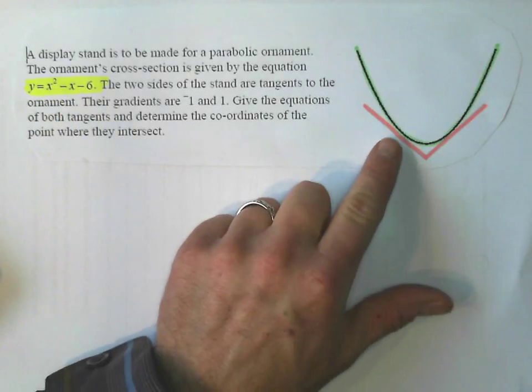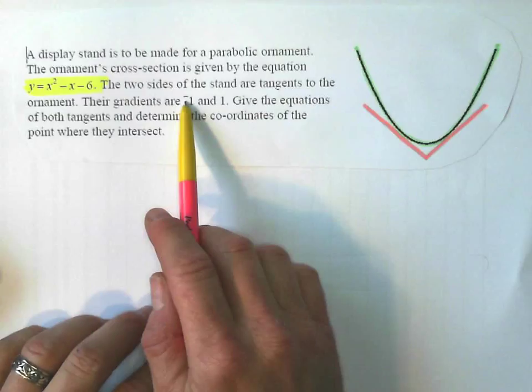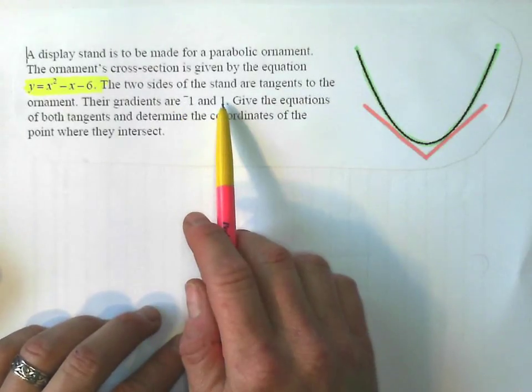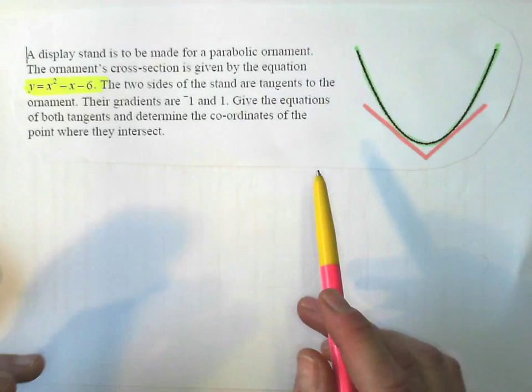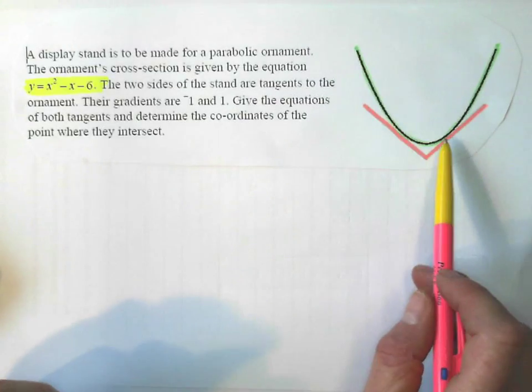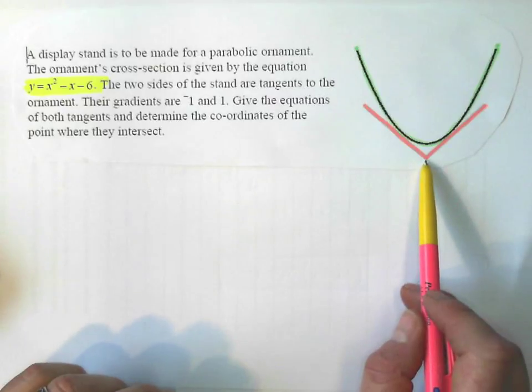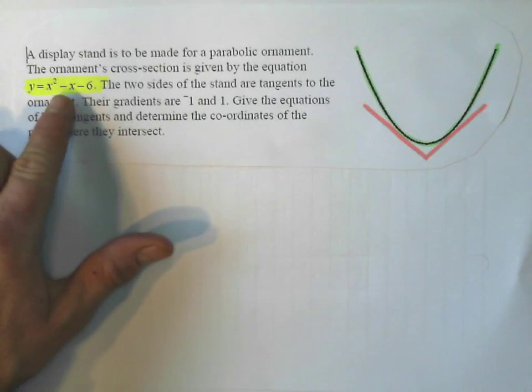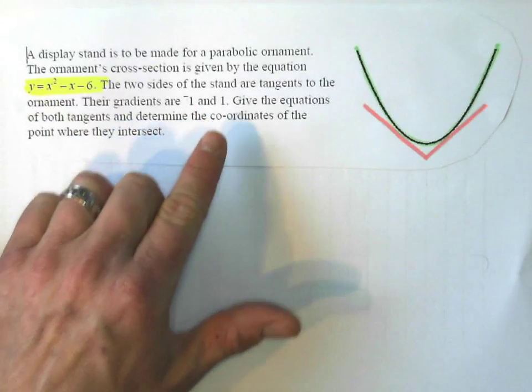The gradient of this tangent line is negative 1, and the gradient of this tangent line is positive 1. We want the equations of both those tangent lines and where they meet. So the information we need: we've got the equation for the parabola and the gradient of the two tangent lines.